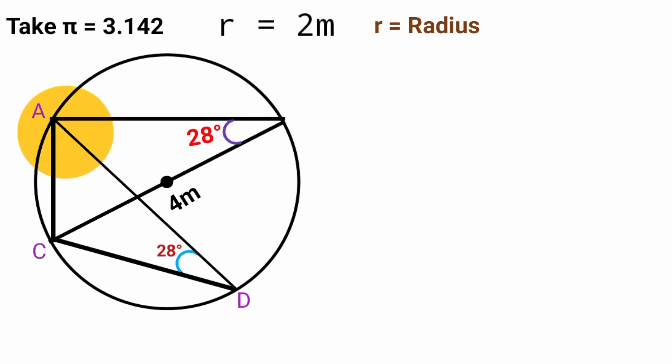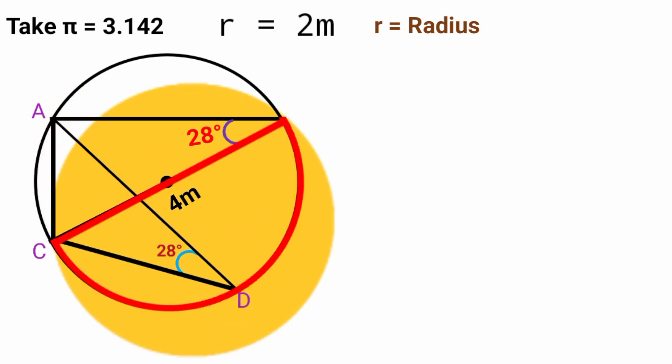Now coming back to this angle here, this angle is an angle subtended by a semicircle. And any angle subtended by a semicircle to the circumference is a right angle. And that means this angle here is a right angle, meaning 90 degrees.